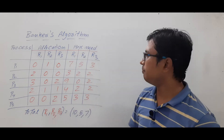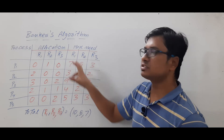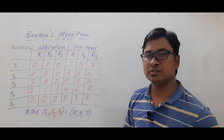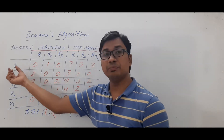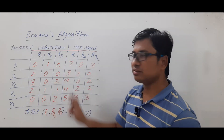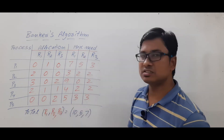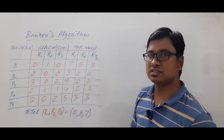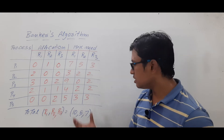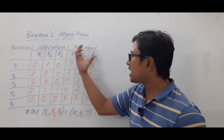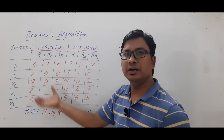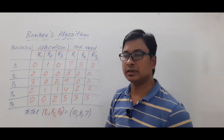The max need matrix represents the maximum requirement for each process. For example, P1 requires seven instances of R1, five of R2, and three of R3 to complete its task. Similarly, P5 requires five instances of R1, three of R2, and three of R3. This is the maximum requirement for each process, out of which some resources have already been allocated.